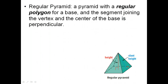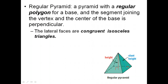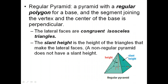For a regular pyramid, a regular pyramid has a regular polygon for its base, and the segment joining the vertex and the center of the base are perpendicular. The lateral faces are all congruent isosceles triangles, and the slant height is the height of the triangles that make up the lateral faces. A non-regular pyramid doesn't have a slant height.